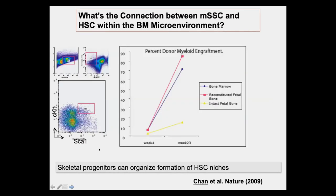Within this marrow cavity, there are also phenotypic hematopoietic stem cells that are KIT-positive, SCA-positive, lineage-negative. These are bona fide functional hematopoietic stem cells because, like true blood-forming stem cells, they have the ability to rescue mice after the host bone marrow compartment has been ablated by a lethal dose of irradiation. So we performed a bone marrow transplant using the stem cells found in these ectopic bones.